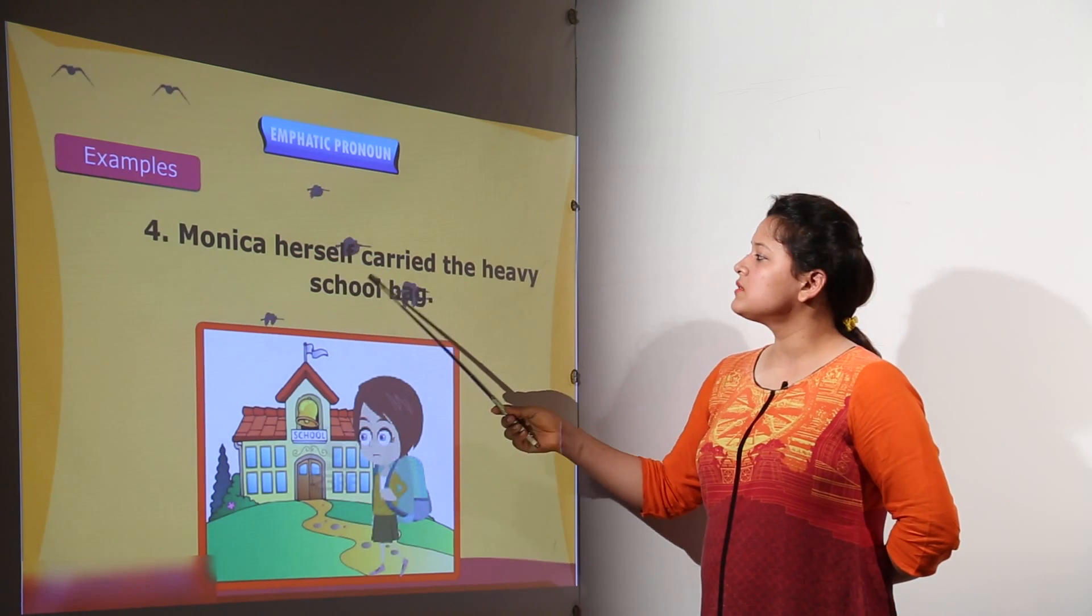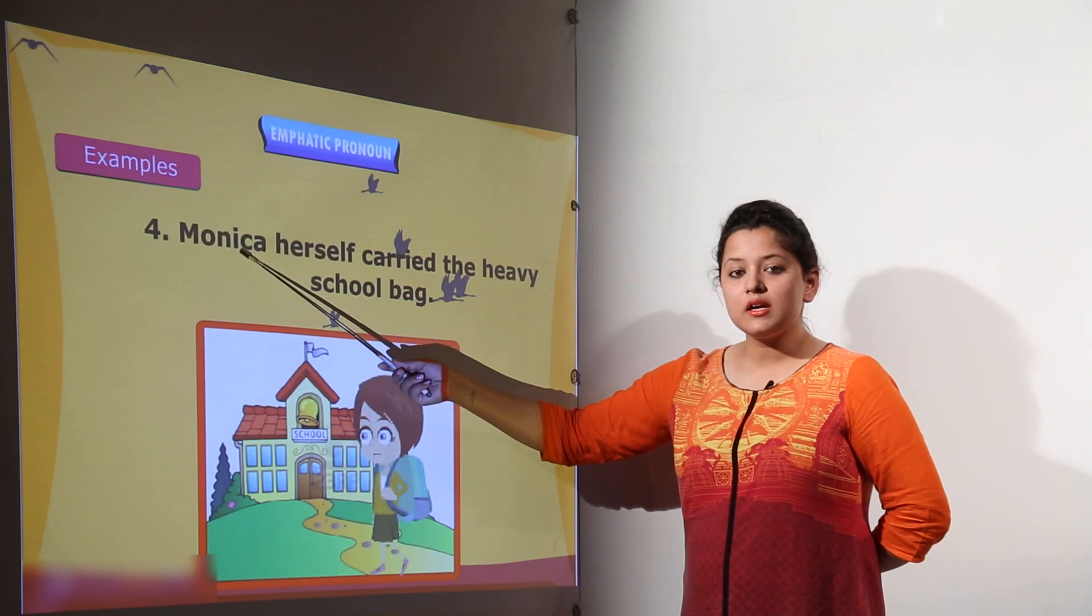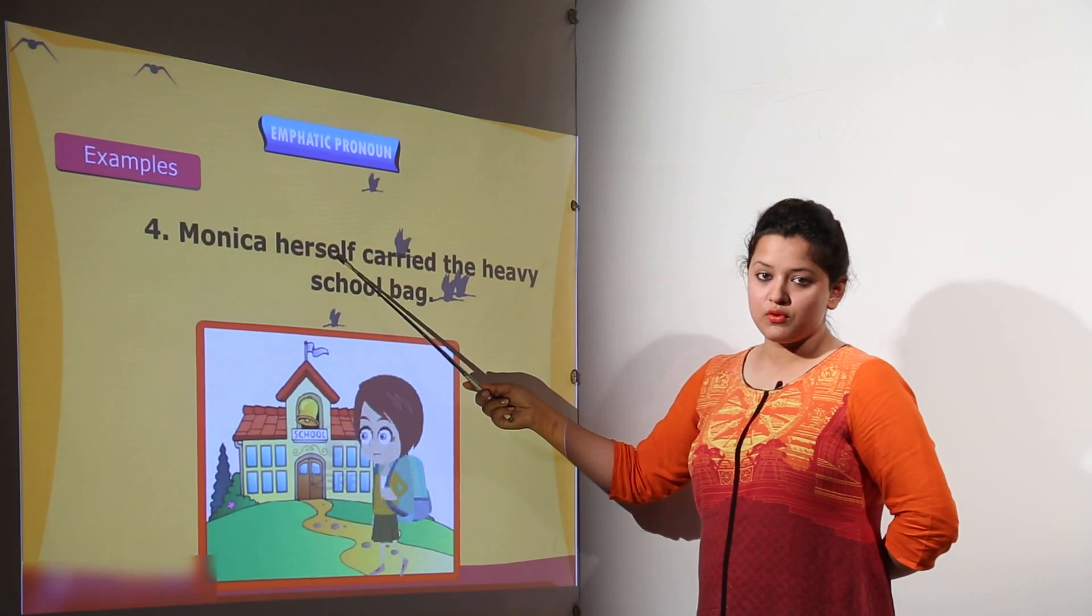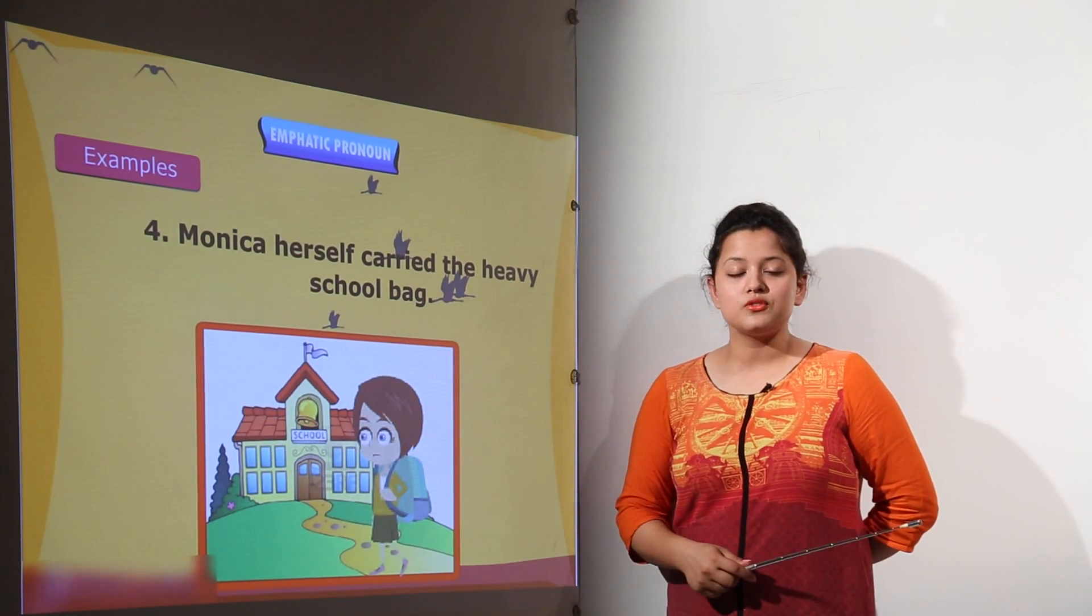The fourth example here is, Monika herself carried the heavy school bag. So, Monika here is the subject and herself is the self word for her and which is singular. Because Monika over here is single.